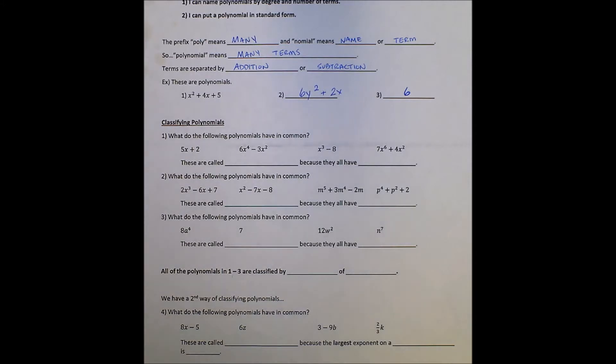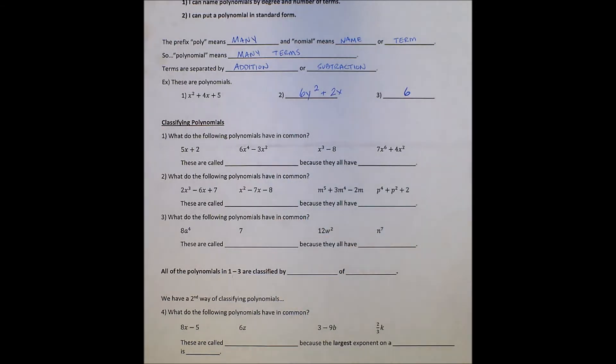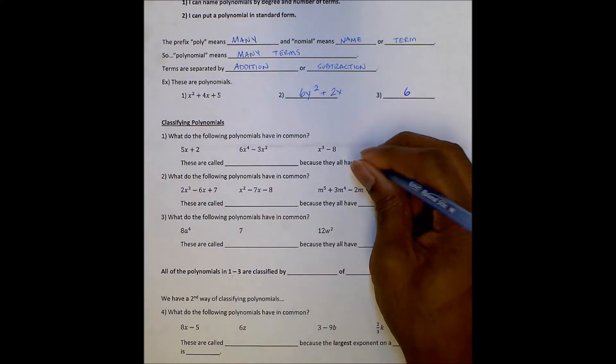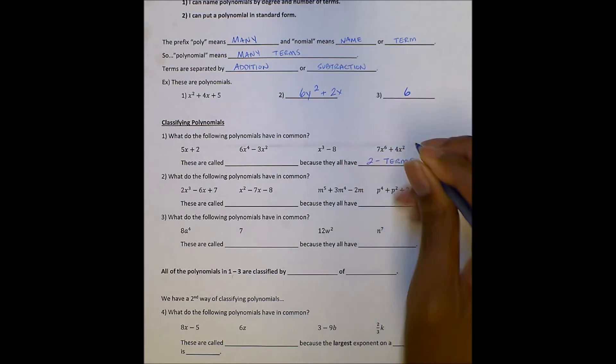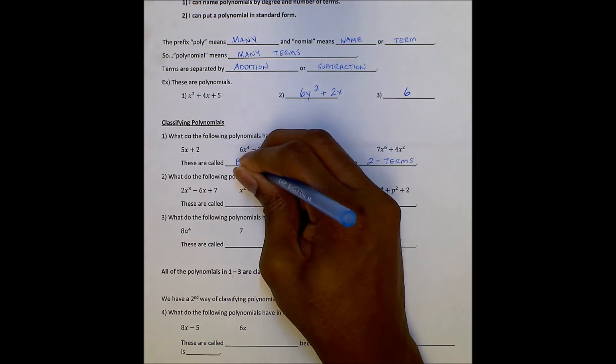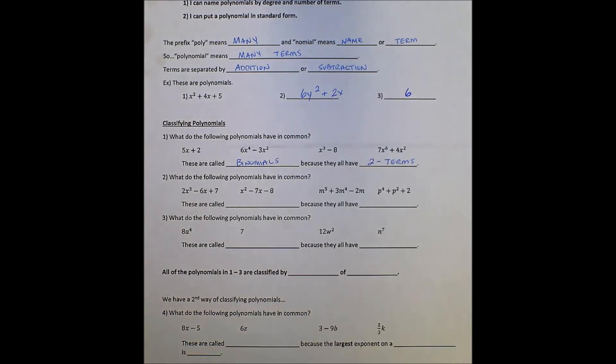Let's talk about classifying the polynomials here and look at these four polynomials that we have: 5x plus 2, 6x to the 4th minus 3x squared, x cubed minus 8, 7x to the 6th plus 4x squared. What do these have in common? Hopefully you see that they have two terms. We call polynomials with two terms binomials. We call them bi because of that prefix means 2 - bicycle, bipolar, binoculars.